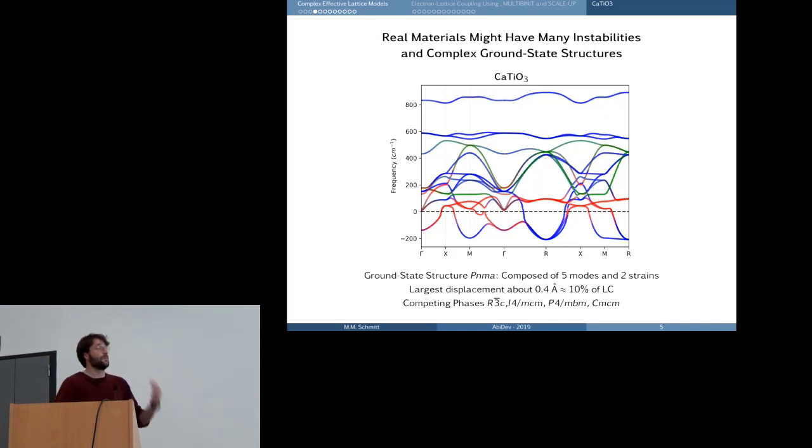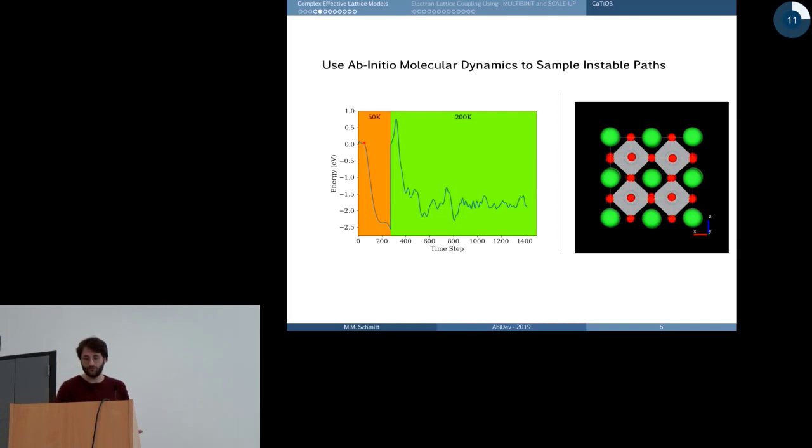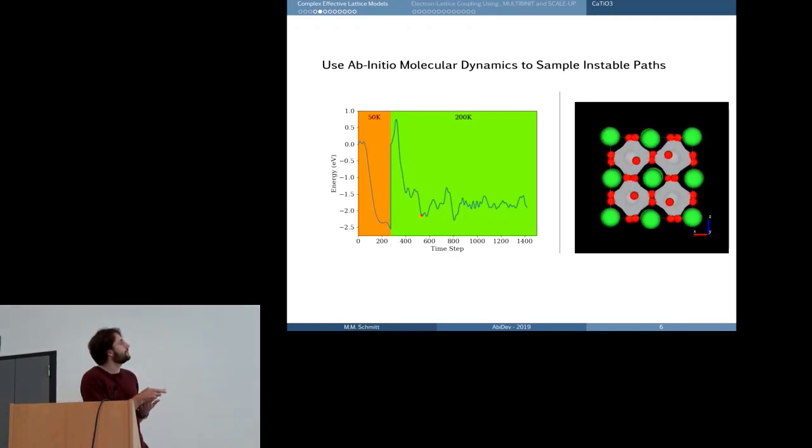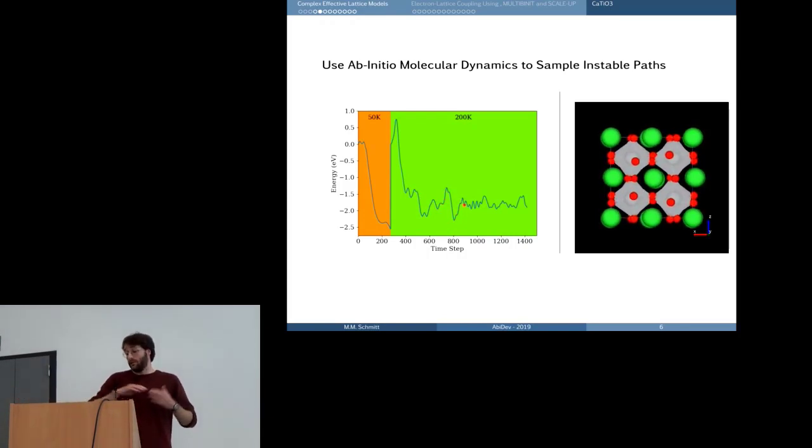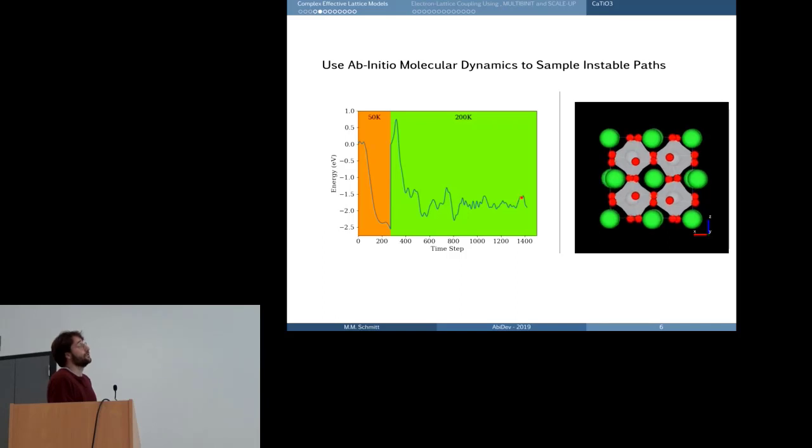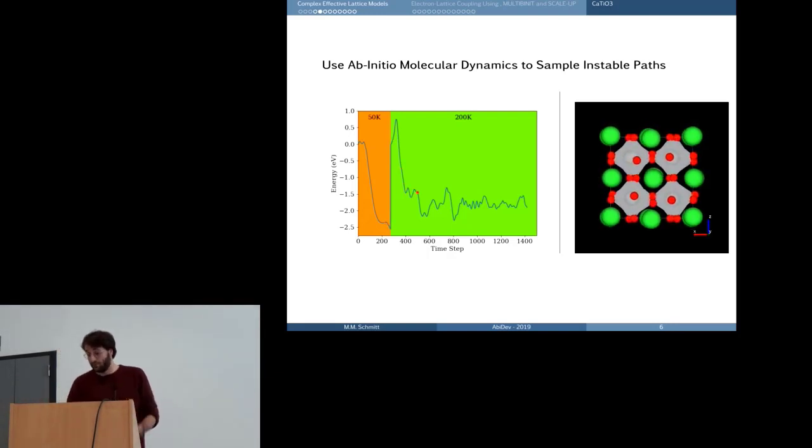So the first question is how to sample this energy landscape—how do we get the data to fit? And one way that was put forward to do that is to use ab-initio molecular dynamics, that we start from the reference configuration, from the cubic, and just let it relax to the ground state phase and let it vibrate around, so that we get a non-biased random sampling of the potential energy surface. And what this provides is quite nicely a path between the reference and the ground state that is probably the most favorable one.